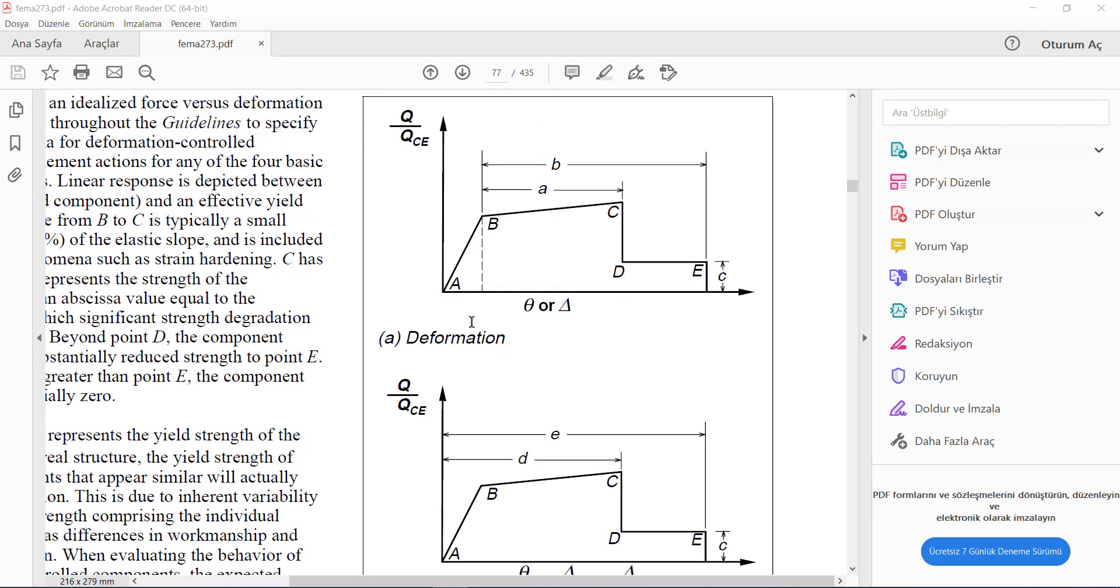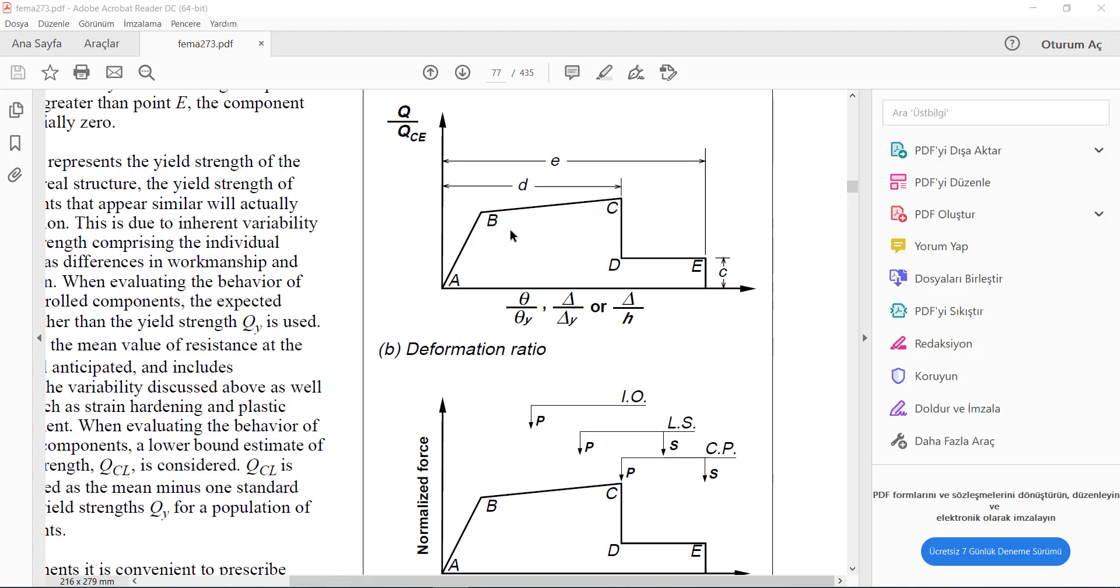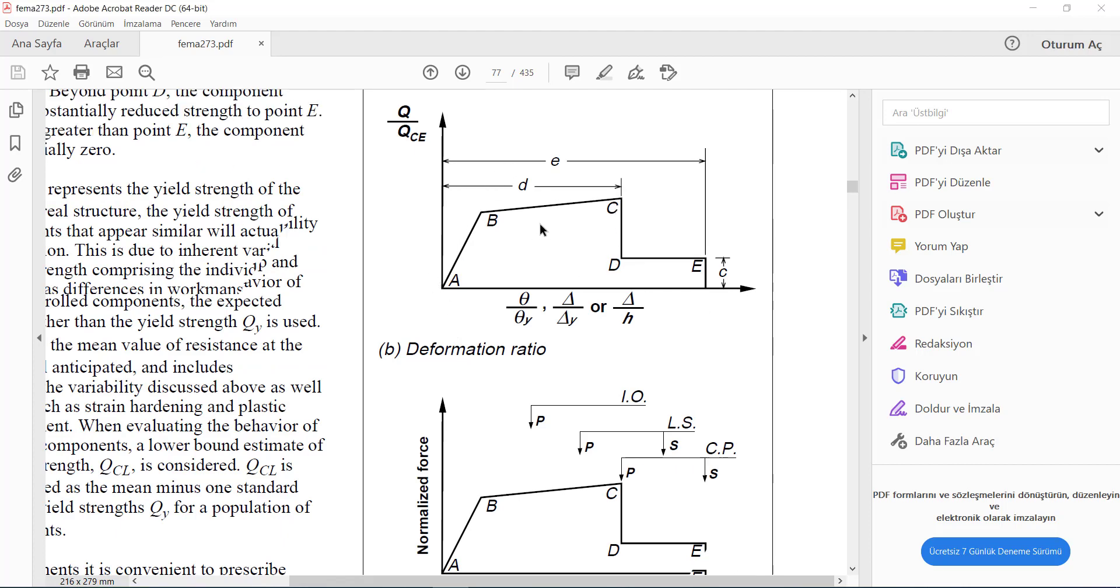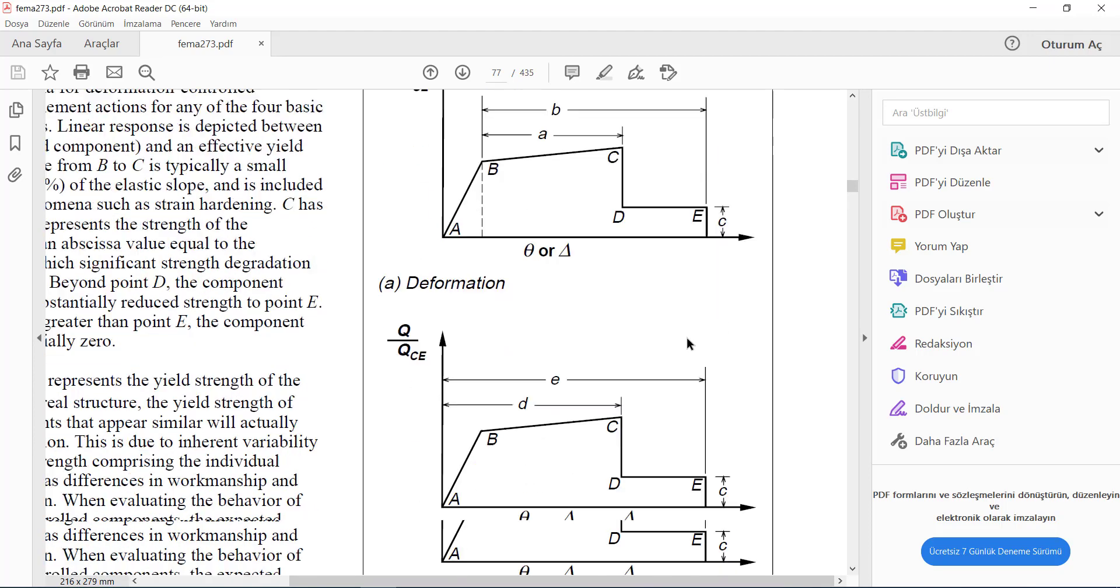So as you can see here, this is the component acceptance criteria, and to find the coordinate for each point in this graph, we need the values of A, B, and C.